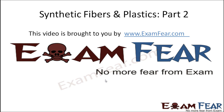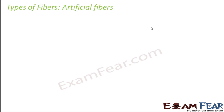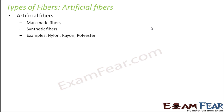This video on synthetic fibers and plastics part 2 is brought to you by examfear.com. The next type of fiber is artificial fiber. As the name suggests, these are man-made fibers — they are manufactured by humans and do not exist naturally. These are also known as synthetic fibers, so synthetic fibers, artificial fibers, and man-made fibers all mean the same thing.